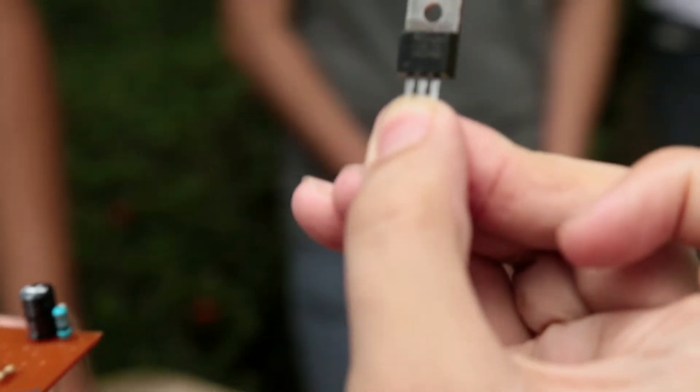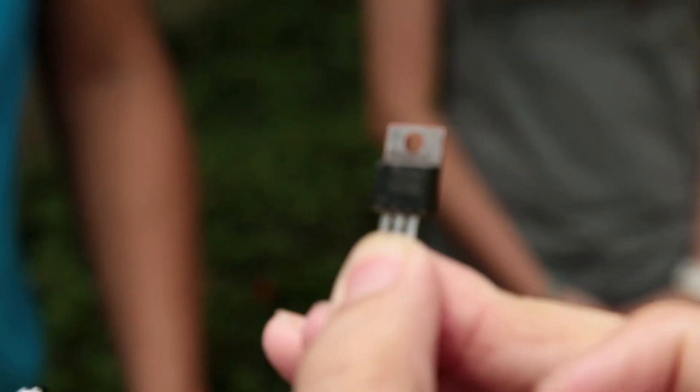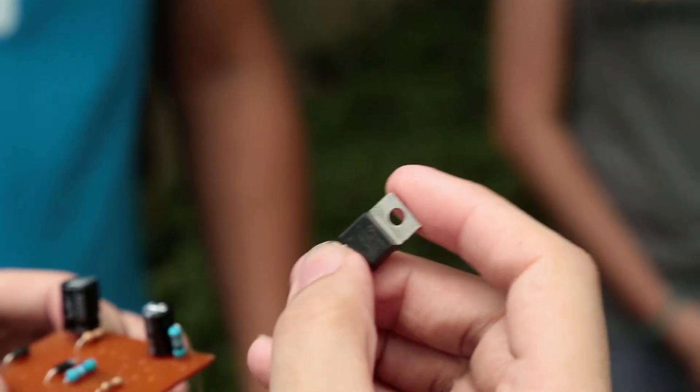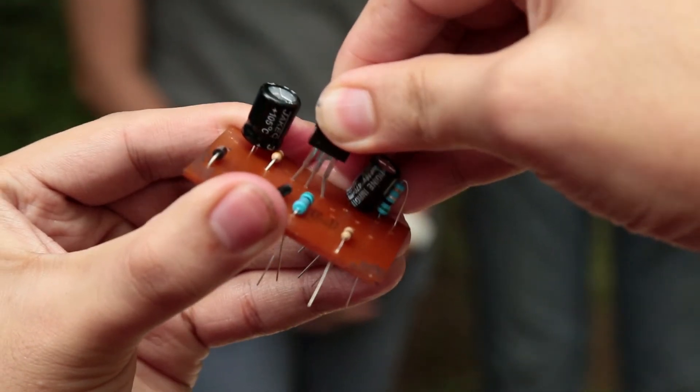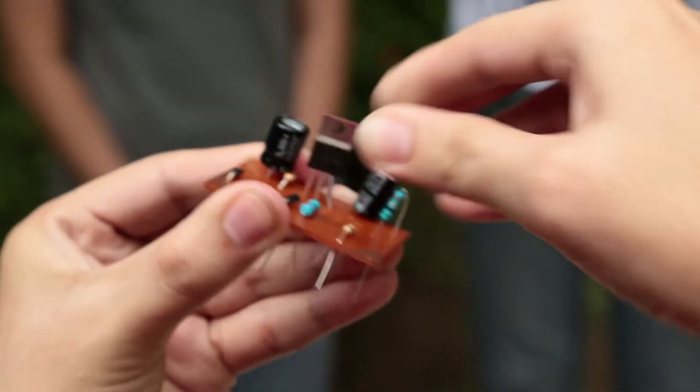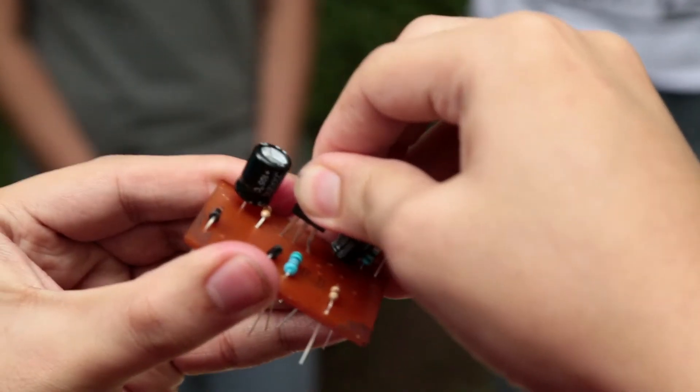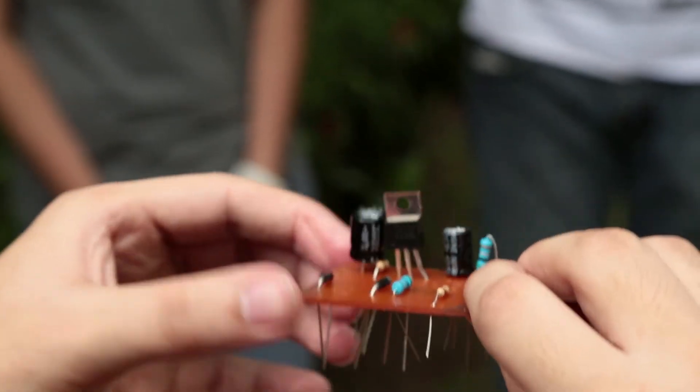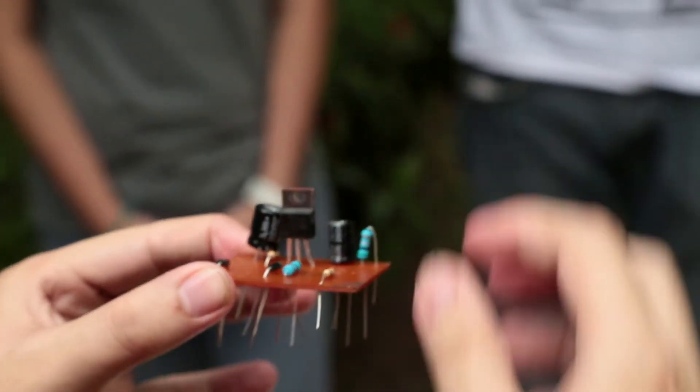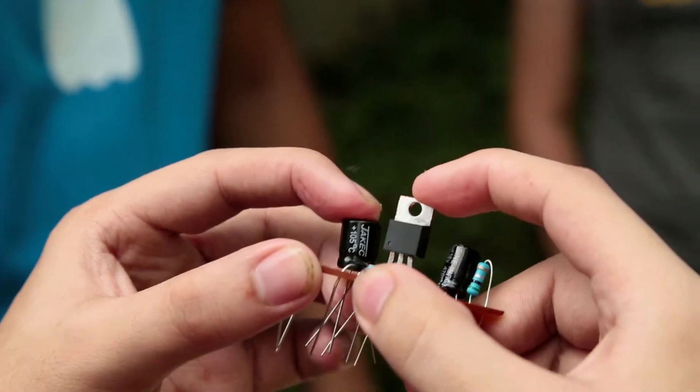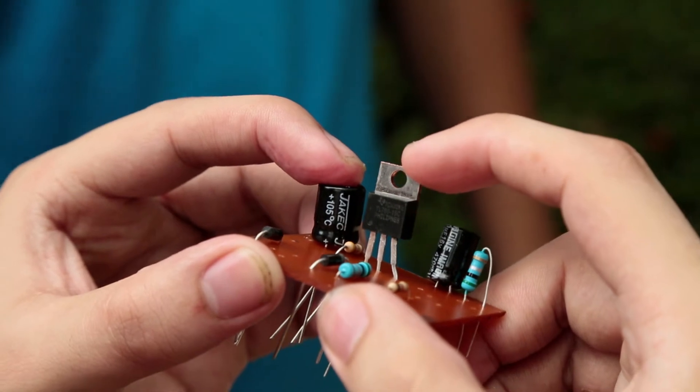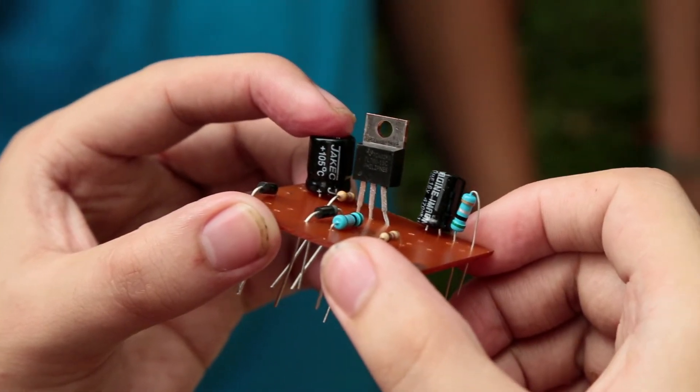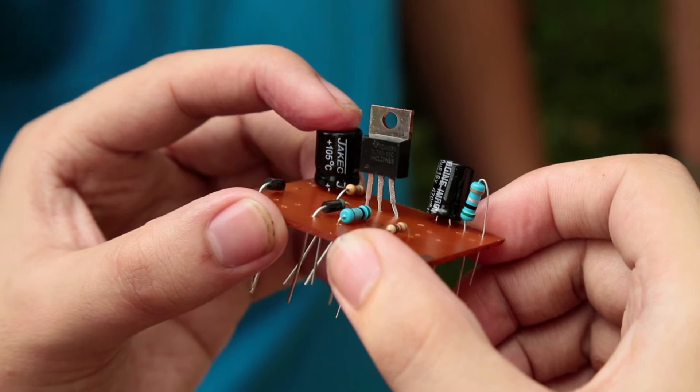We have here the 78015, the 15 volt regulator that will ensure the voltage from the solar panel remains at 15 volts. Be very careful bending the legs because transistor legs can easily break. Leave a certain amount of space between the board and the regulator because later we'll be putting a heat sink on it to ensure the heat it dissipates won't damage the component.